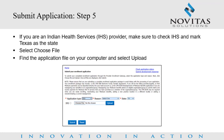Submit Application Step 5: If you are an Indian Health Services or IHS provider, make sure to check IHS and select Texas as the state. You should have already saved the application on your computer. Next, you will select Choose File and find the application file on your computer. Once the correct file has been selected, click Upload.